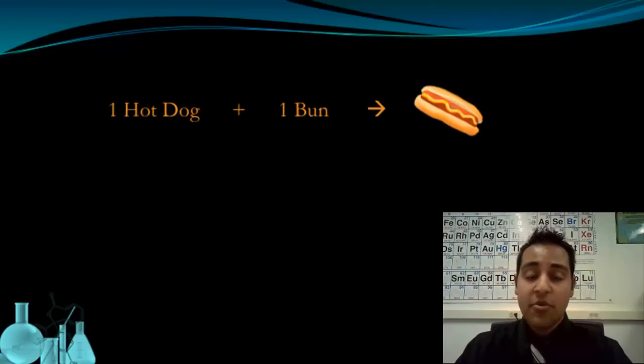We can make an analogy to throwing a barbecue and making hot dogs. To make a hot dog, you need one hot dog and a bun, and you can get a hot dog out of that. However, when you buy one packet of hot dogs and one packet of buns, you don't get the same number.